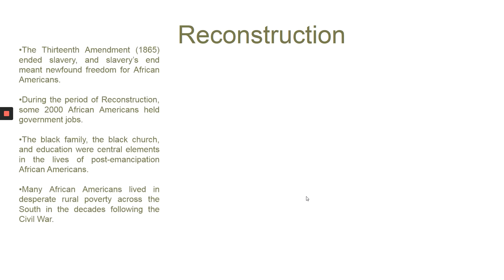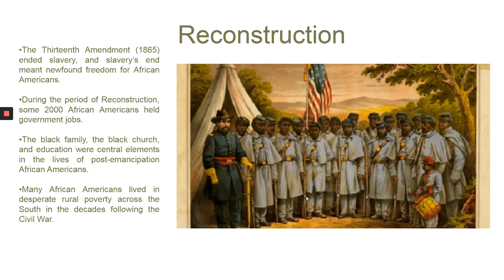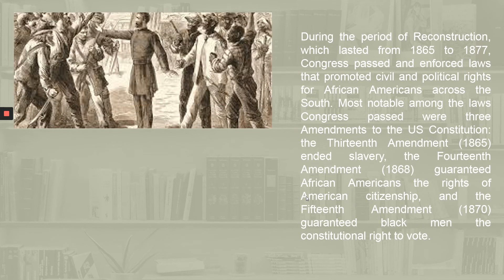Reconstruction. The Thirteenth Amendment in 1865 ended slavery and made newfound freedom for African Americans. During the period of Reconstruction, some 2,000 African Americans held government jobs. The Black family, the Black church, and education were central elements in the lives of post-emancipation African Americans. Many African Americans lived in desperate rural poverty across the South in the decades following the Civil War. During the period of Reconstruction, which lasted from 1865 to 1877, Congress passed and enforced laws that promoted civil and political rights for African Americans across the South.